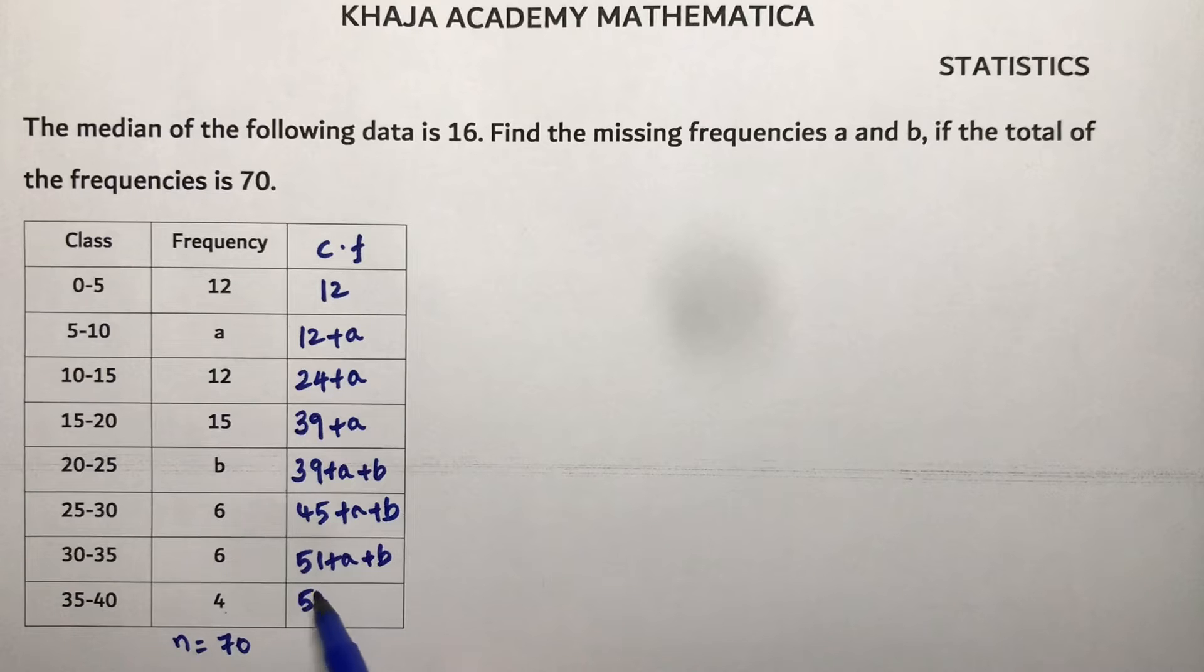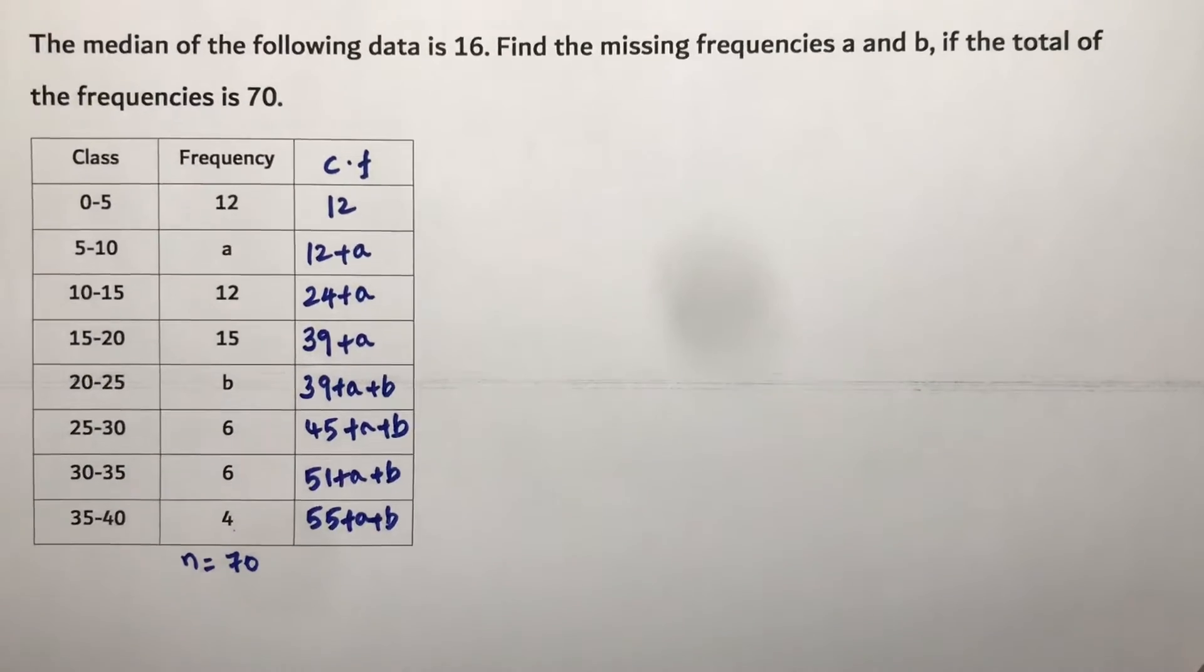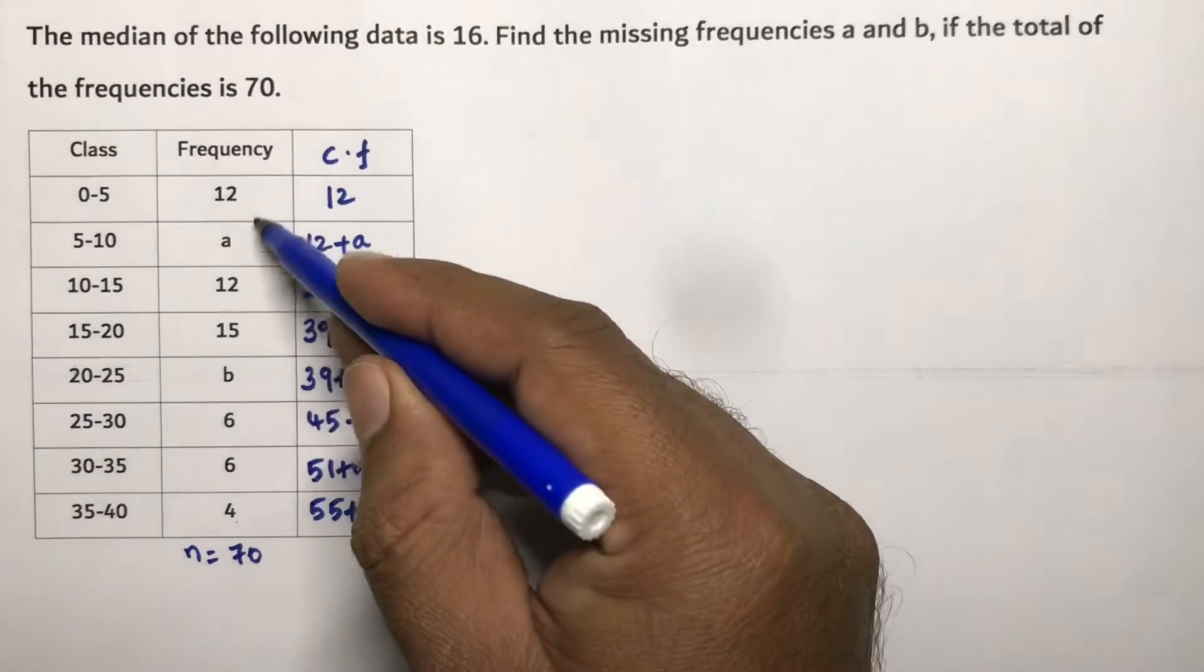So 39 plus 6 is 45 plus a plus b. 51 plus a plus b. 51 plus 4 is 55 plus a plus b.